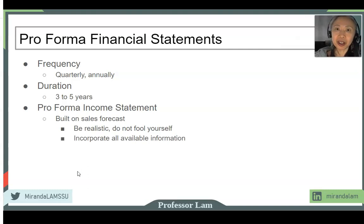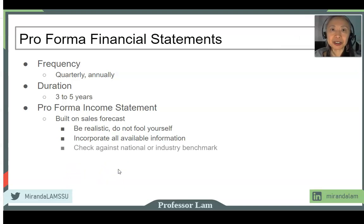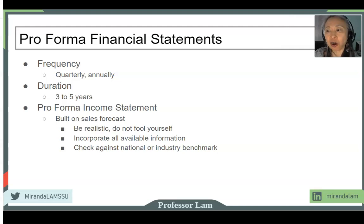We want to incorporate as much information as possible, but it is hard to be objective. One approach to help us be objective is to check our assumptions against some kind of outside external benchmark — industry averages, national averages, main competitors. Those are all good sources to use as a check.